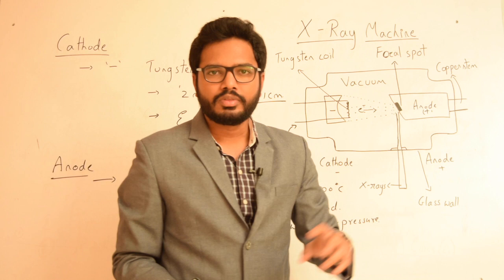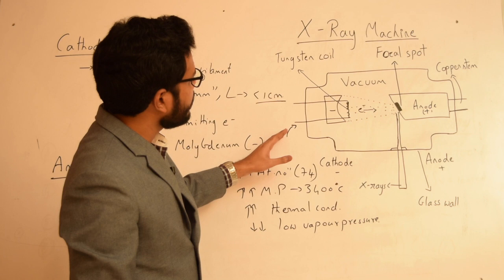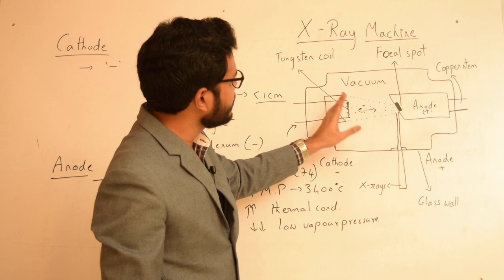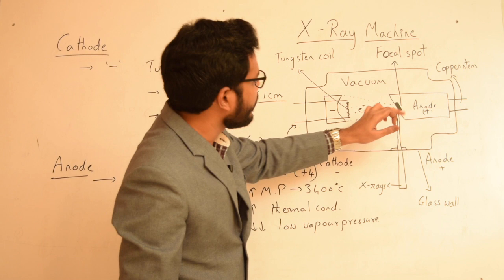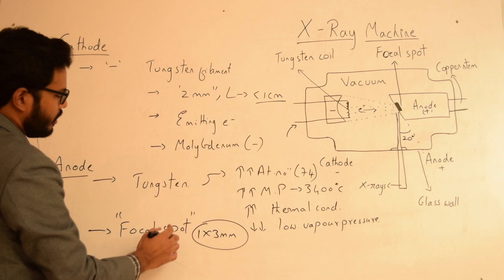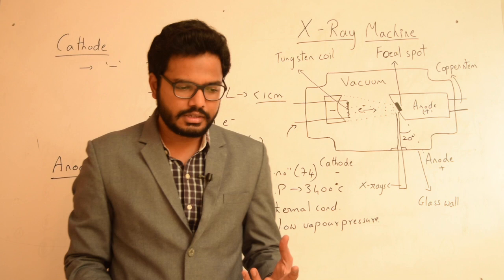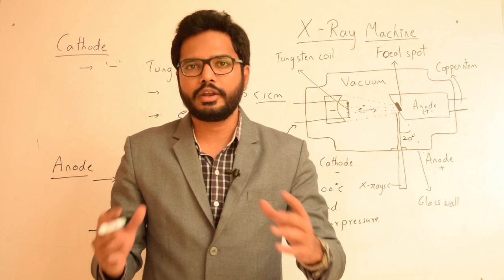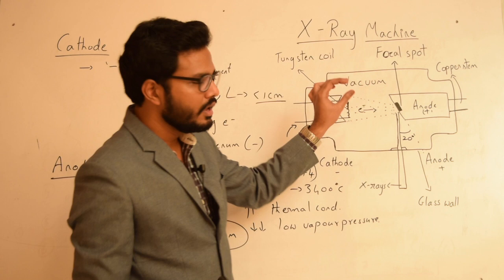When electricity is passed through the tungsten coil, electrons are produced, released, and travel at greater speeds, hitting a particular area on the anode called the focal spot. The focal spot has dimensions of 1 × 3 mm. For superior image sharpness — which is the ability to identify the outline of an image with clarity — the focal spot size has to be as small as possible.